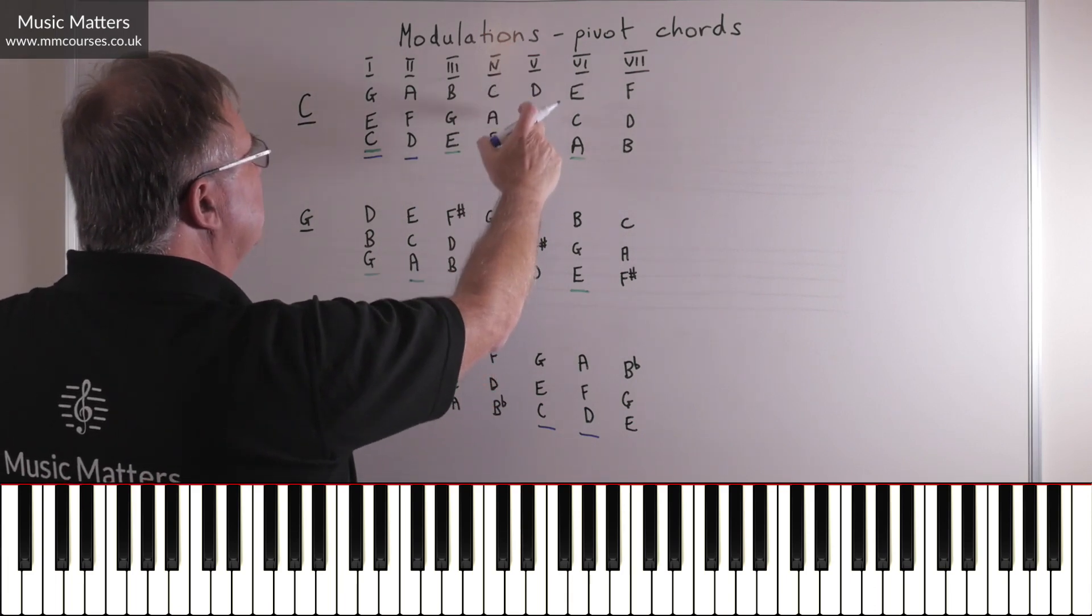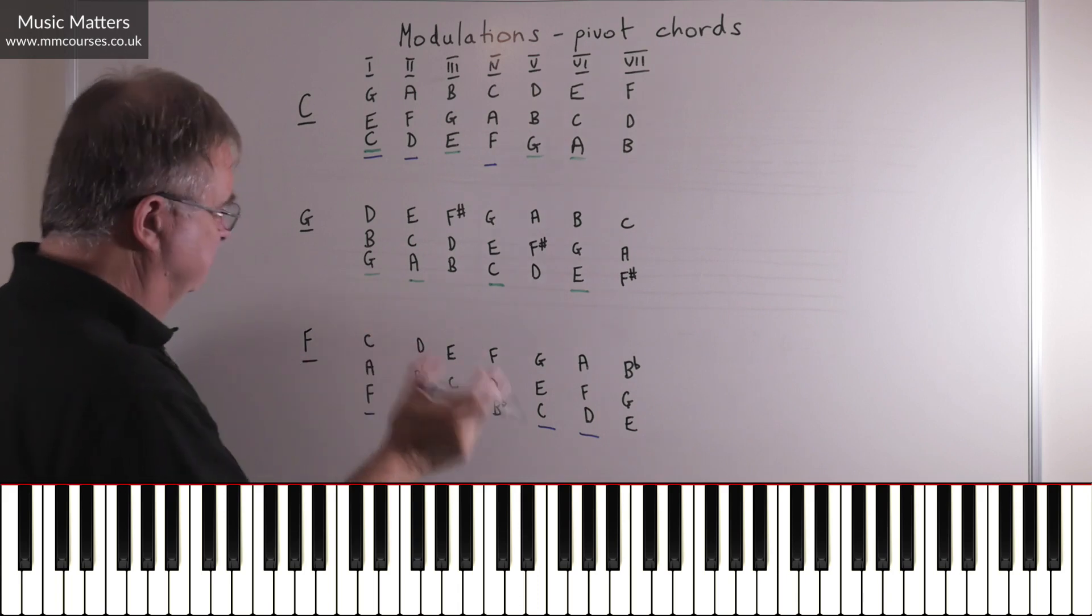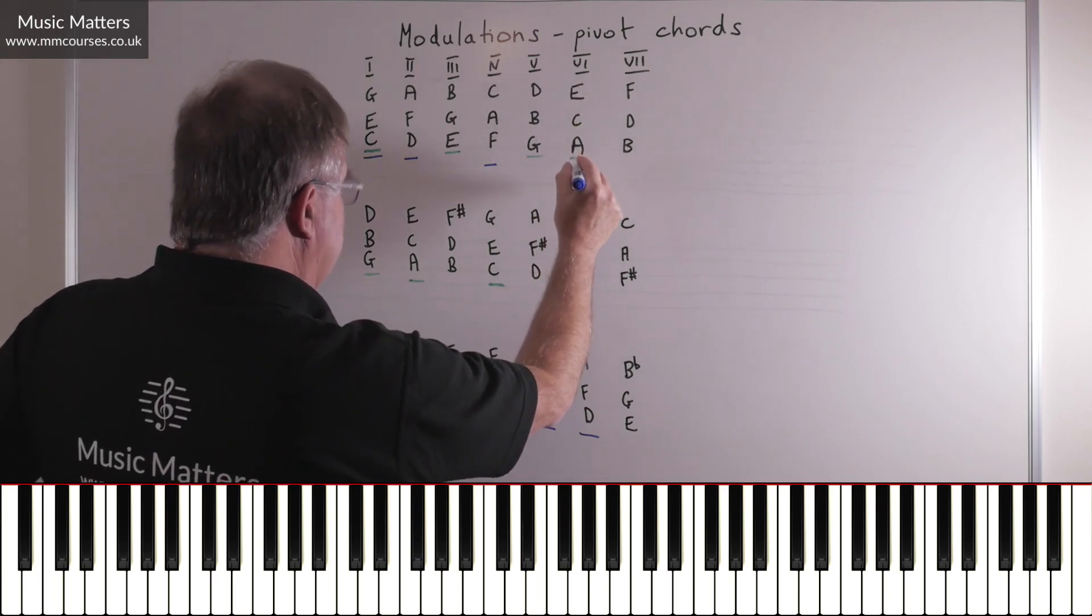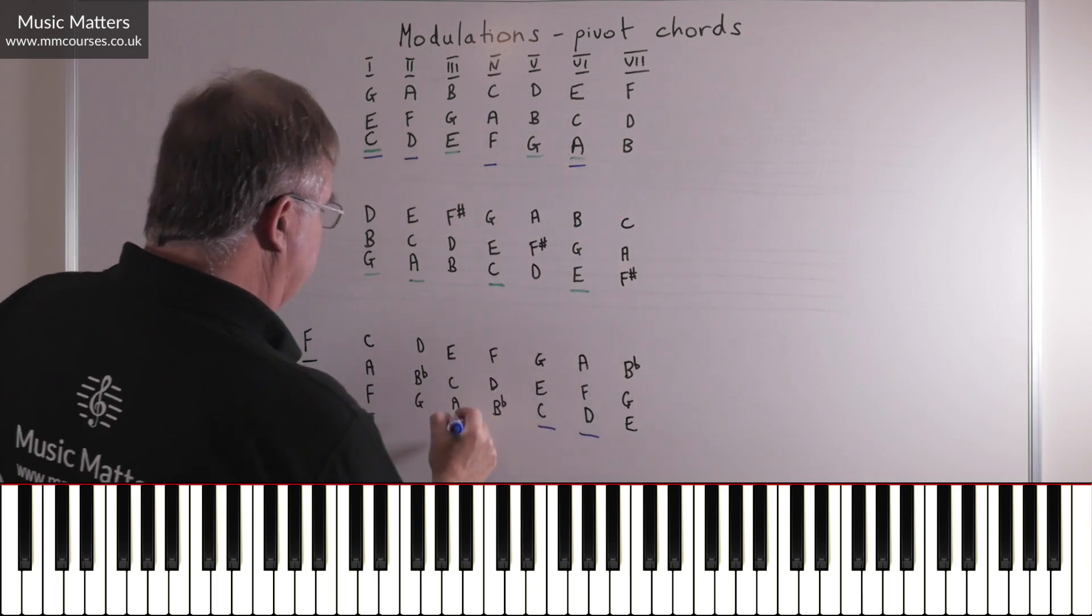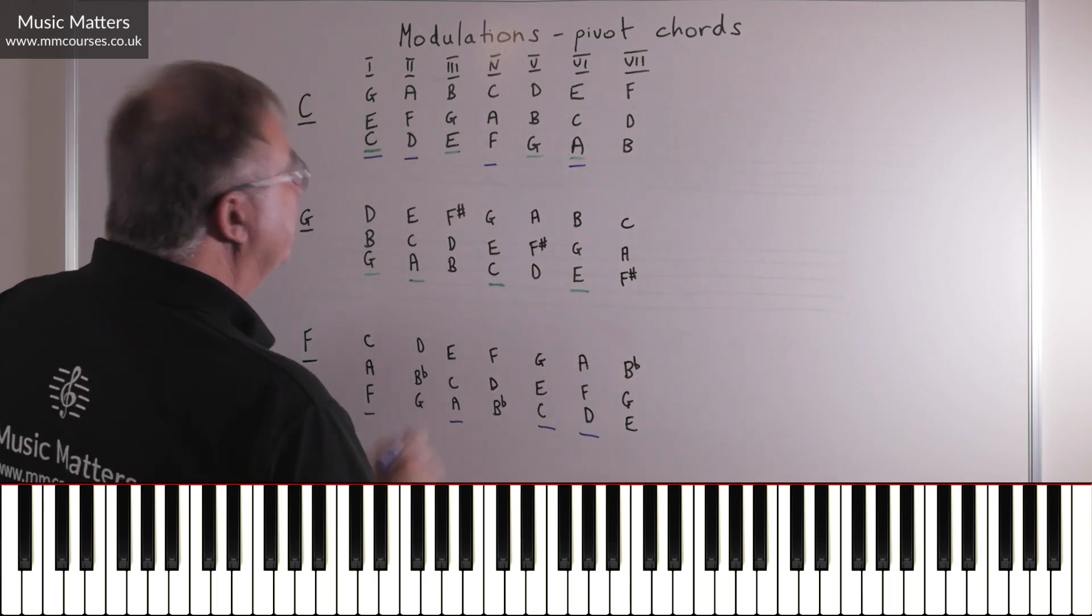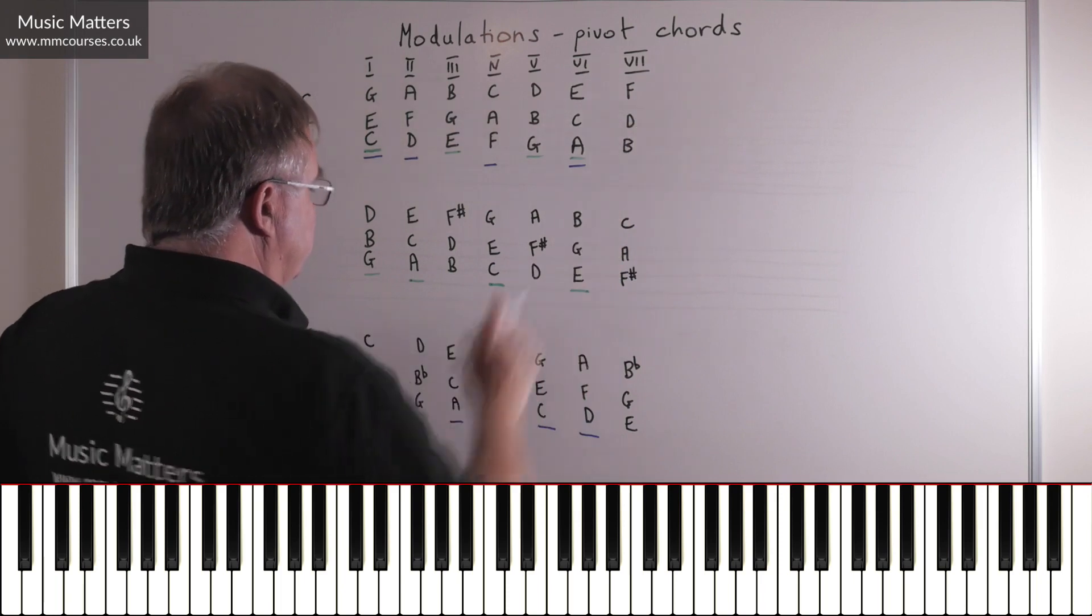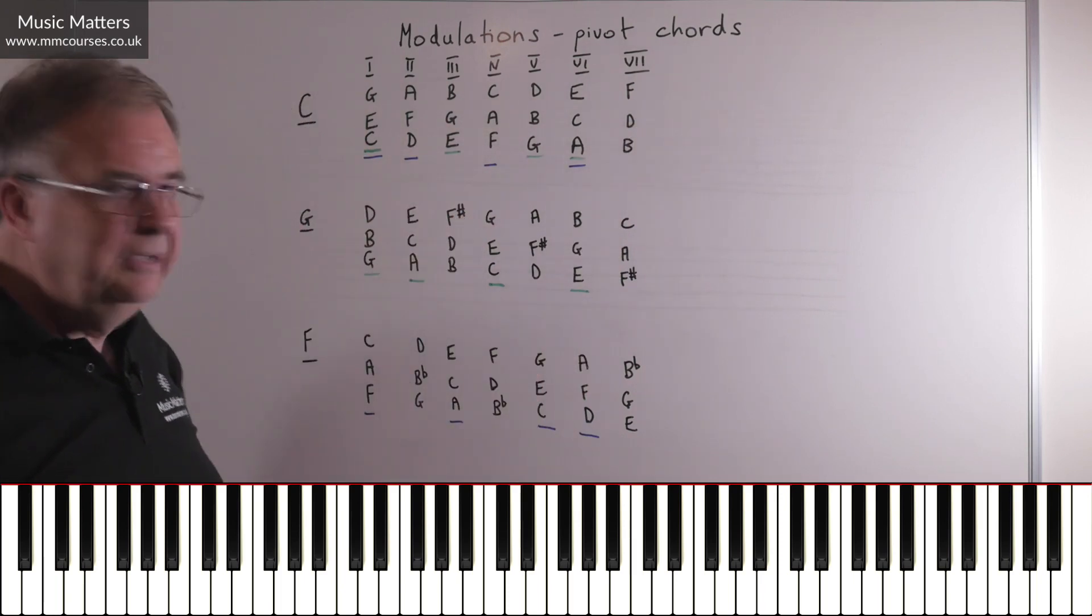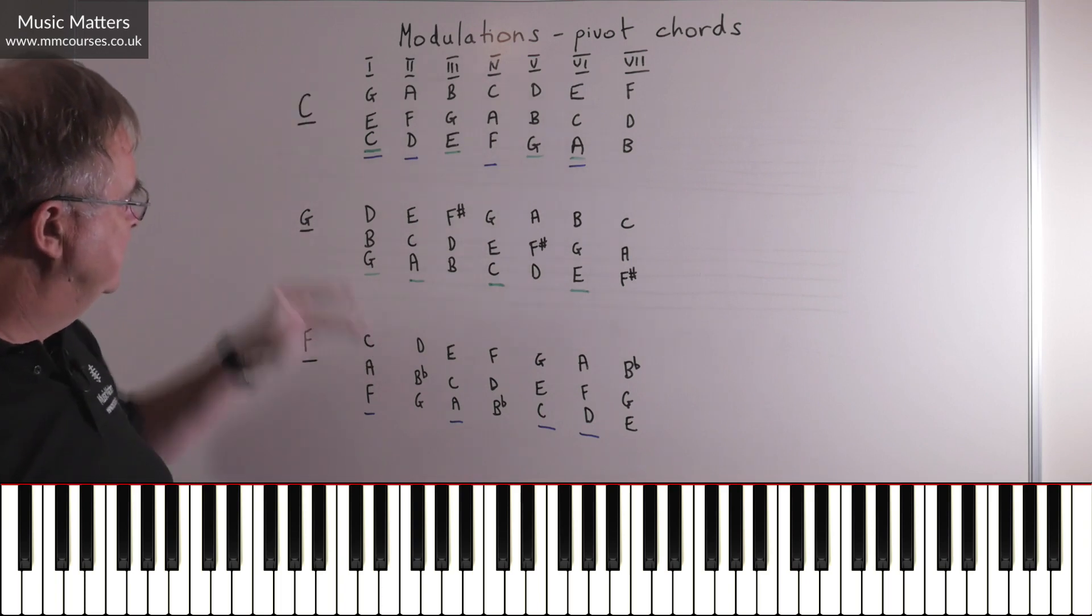G B D is no good because it's got B natural, F major's got B-flat, and A, C, E is another one because that comes down here. This one doesn't work because it's got a B natural instead of a B-flat. So again, you see we've got four pivot chords that would take us from C major to F major.